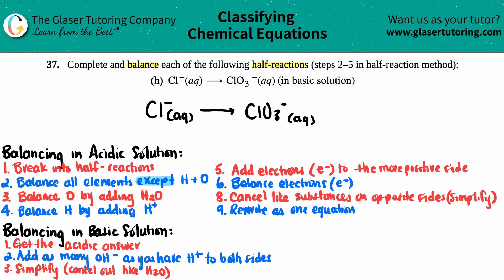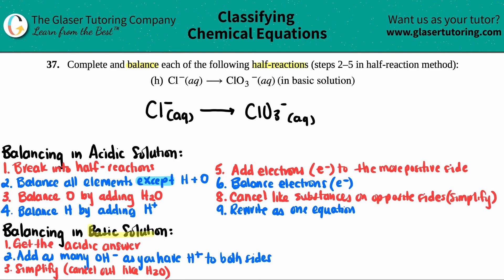This is our first basic solution question for balancing redox reactions. In order to balance in a basic solution, the first thing is that you need to get the acidic answer. You always have to get the acidic answer first, and then you can just manipulate it to get the basic solution.